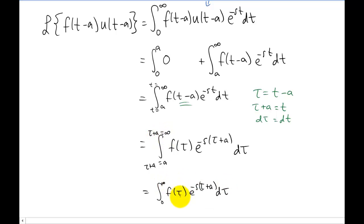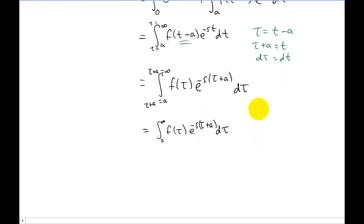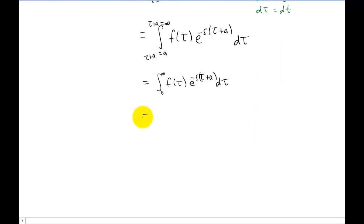Now this is starting to look a lot like a regular old Laplace transform. What we do have to do is one or two little steps of algebra. And now you'll notice that this term right here, this e to the negative sa does not have a tau in it. It's a constant with respect to tau. So we can pull that out of the integral.